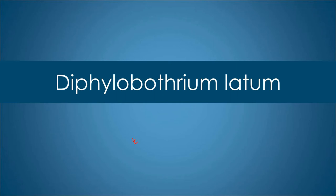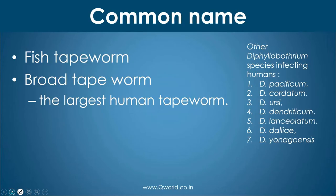Today we are going to learn about Diphyllobothrium latum. The common name for this parasite is fish tapeworm. It is also known as broad tapeworm. It is the largest human tapeworm known. There are other Diphyllobothrium species but this one is of most importance.